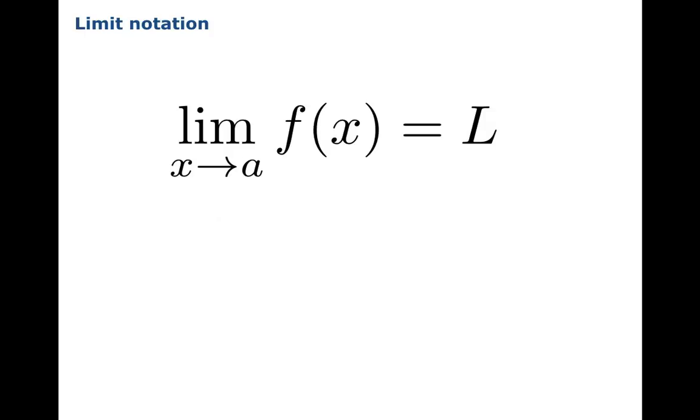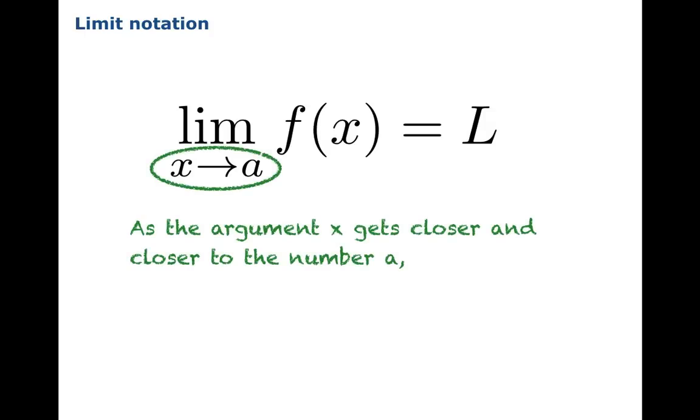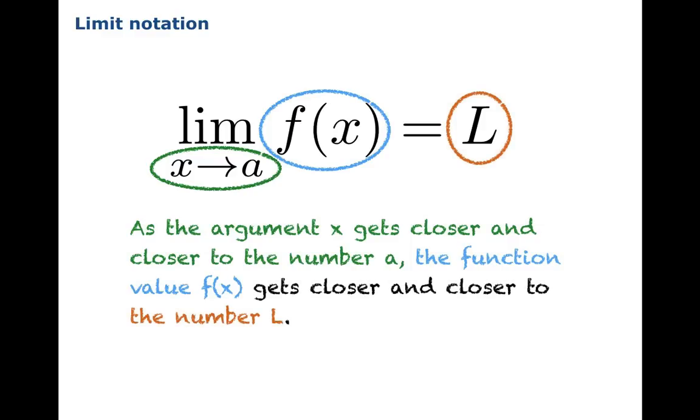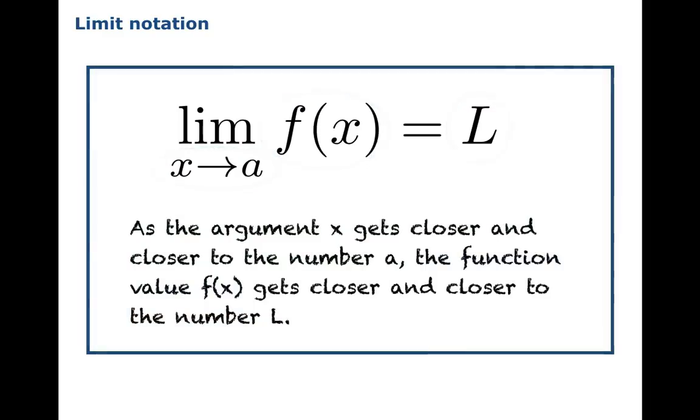When we see this notation, the way you should read it is, as the argument x gets closer and closer to the number a, the function value f of x gets closer and closer to the number l. And that's a heuristic definition for what a limit is.